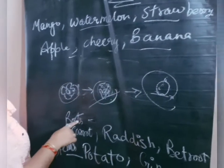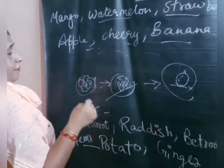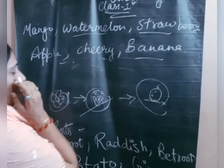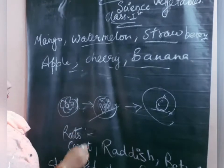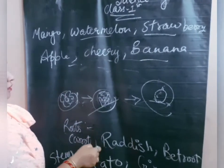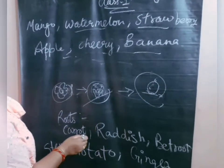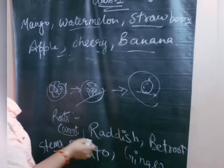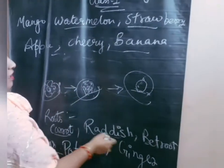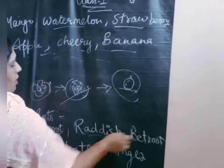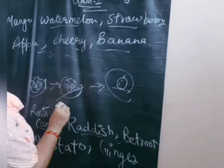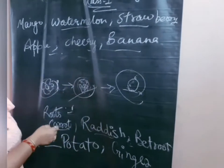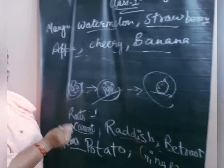Roots. You are eating many vegetables. We eat the roots of some vegetables. Carrot, radish and beetroot are the roots of a plant.